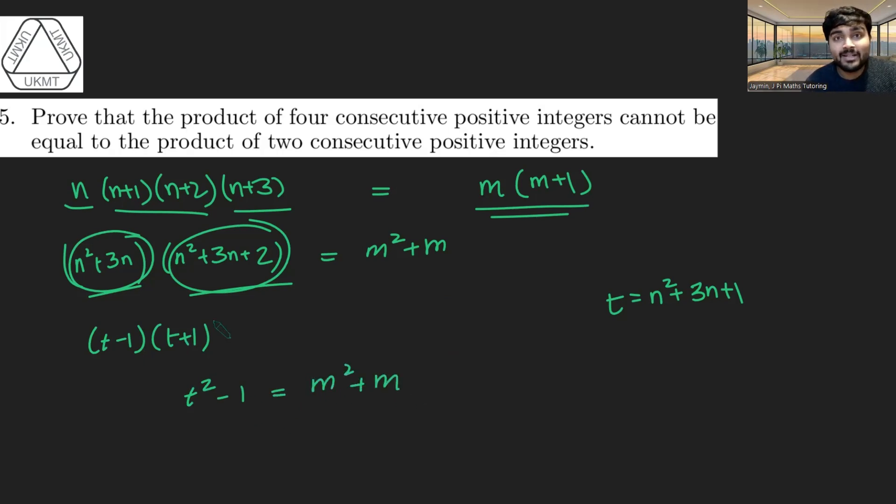So we get T squared minus 1 equals m squared plus m. And bringing the 1 to the other side, we get T squared is m squared plus m plus 1. And now you may see the issue here.